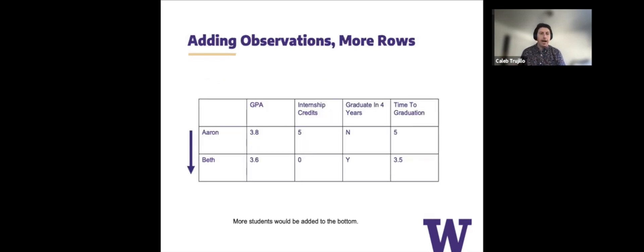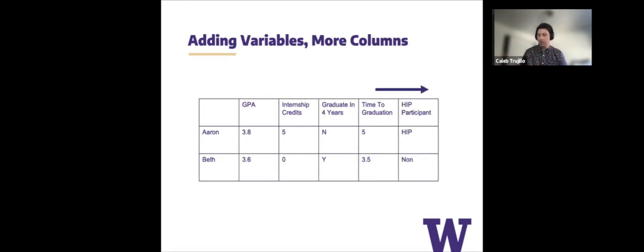So let's say I wanted to add another student, I want to add Beth to this list, and I gather Beth's information. So now I have Beth's GPA, their internship credits, their graduation status at four years, and their time to graduation. So to add more students, I keep adding to the bottom. I make a new row for each student I have. And these are called observations. So each time you have an observation, you should be able to make a new row.